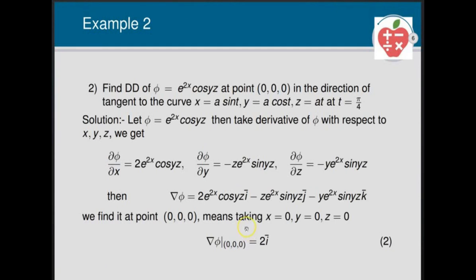Example 2: Find the directional derivative of φ = 5e^(2x) cos(yz) at the point (0, 0, 0) in the direction of the tangent to the curve x = a sin t, y = a cos t, z = at, at t = π/4. Every time in a directional derivative problem, we need to identify the direction. Here we find grad φ at (0, 0, 0) first, then find the tangent vector.